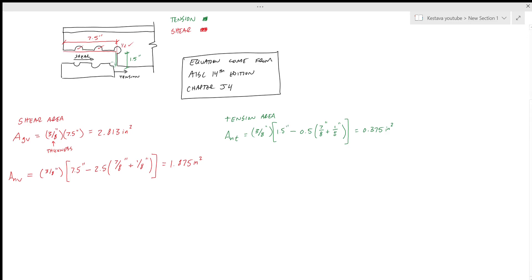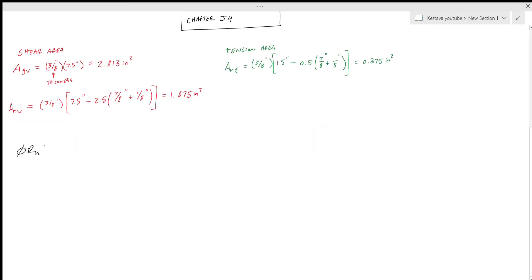Now that we have those values, we can calculate our block shear strength. The equation is phi*Rn equals phi*(0.6*FU*ANV + UBS*FY*AGT) which needs to be less than or equal to phi*(0.6*FY*AGV + UBS*FU*ANT). What are our knowns? We know FY equals 36 KSI, we know FU equals 58 KSI.